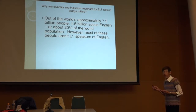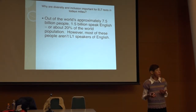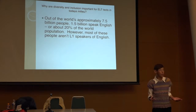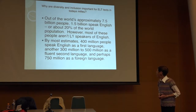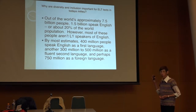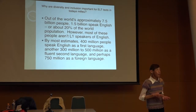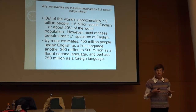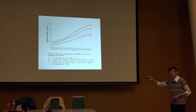Most interactions that occur today in English are between L2 and L2 speakers, and that demands a different kind of expertise and fluency than those between an L1 and L2 speaker. By most estimates, there are 400 million L1 speakers, 300 million L2 speakers, and 750 million people like Japanese learners of English. The number of L2 speakers far surpasses that of L1.